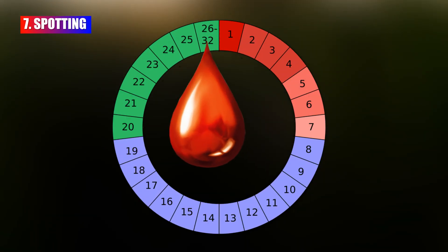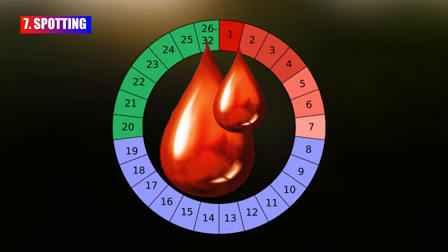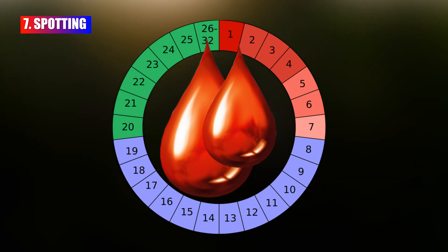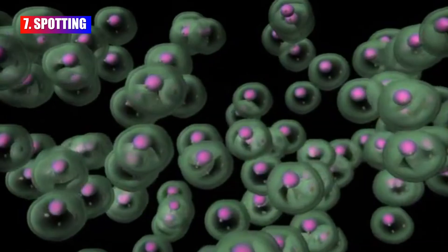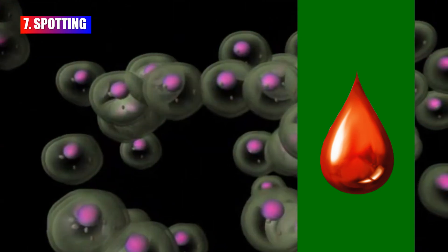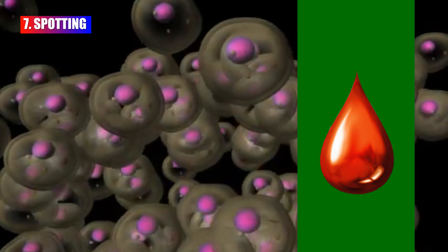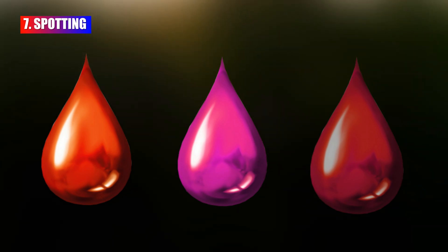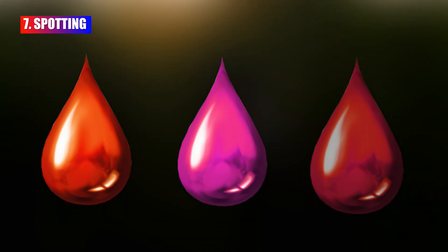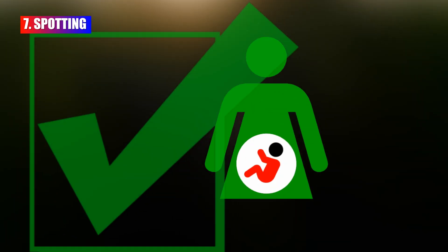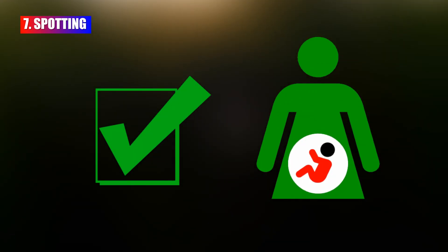Women can experience a small amount of spotting during their ovulation time. Increasing estrogen levels are the main cause of this bleeding. The spotting color may vary from pink to red to brown. Remember, spotting is also a symptom of early pregnancy.